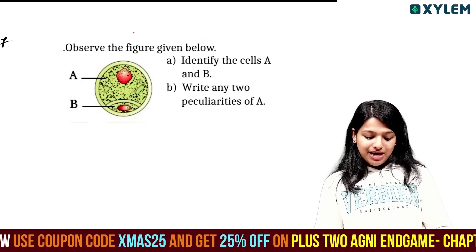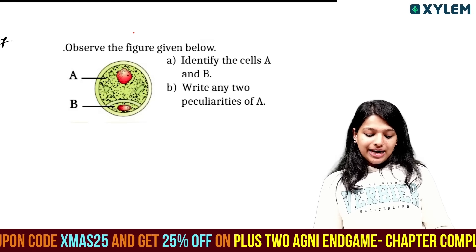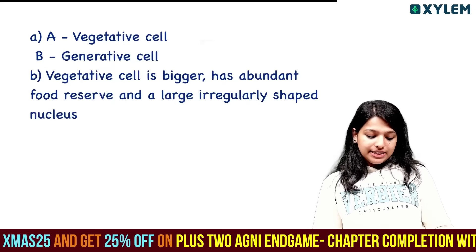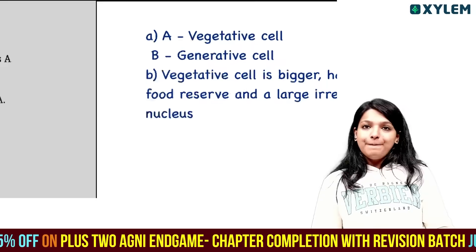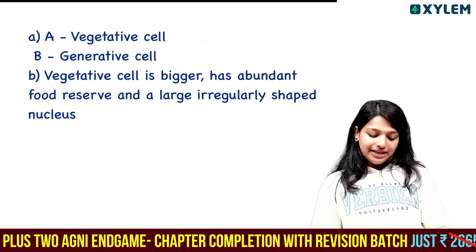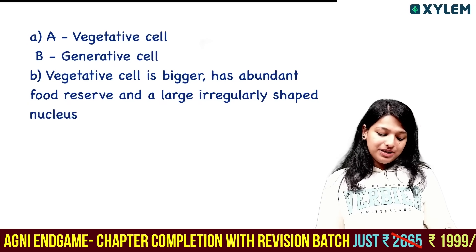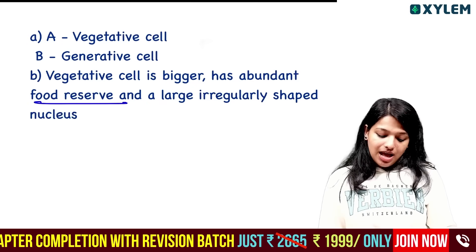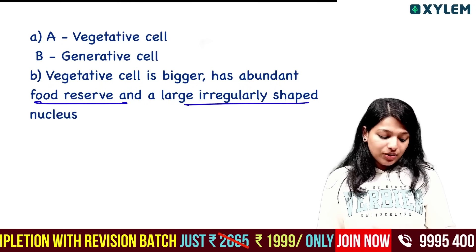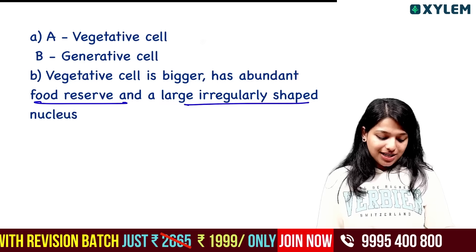Observe the figure. Identify cells A and B. A is the vegetative cell and B is the generative cell. A is a peculiarity — the vegetative cell is bigger, has abundant food reserves, and is largely irregular in shape.